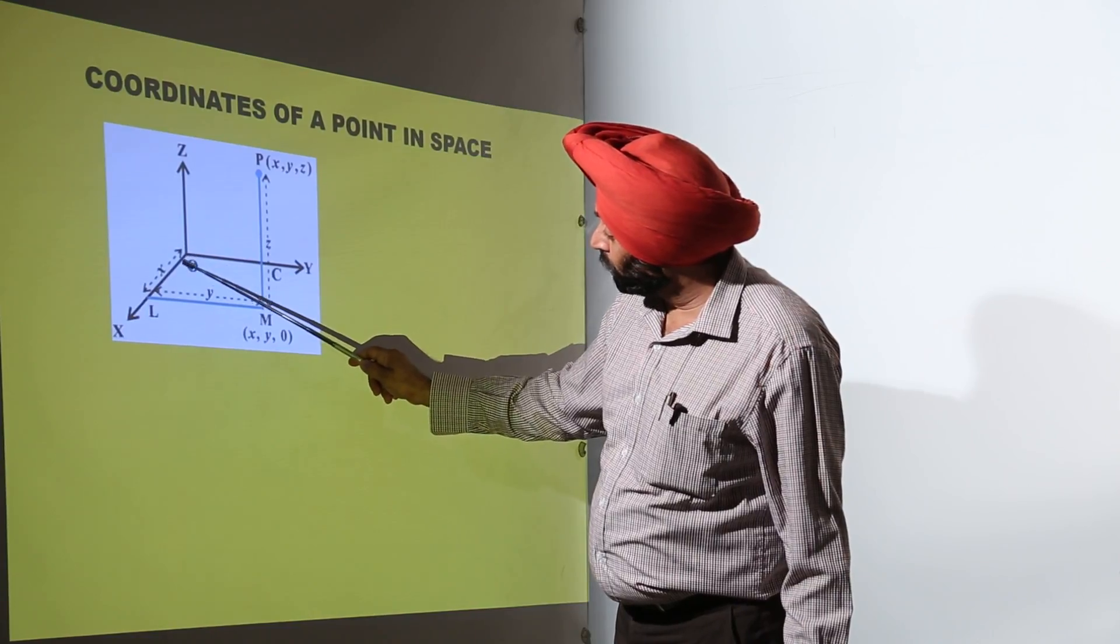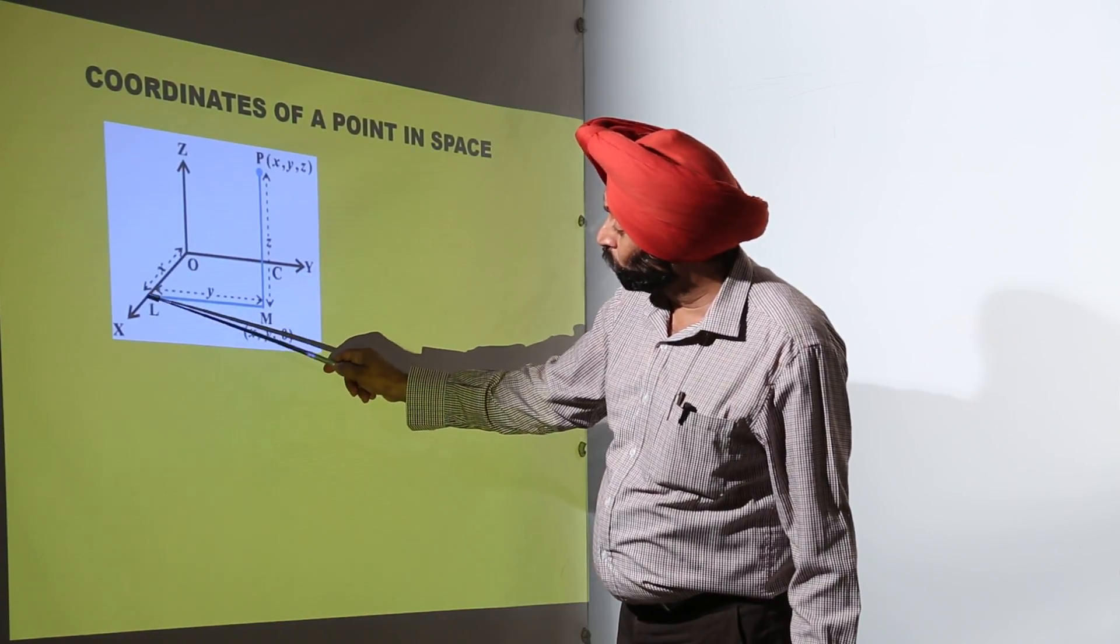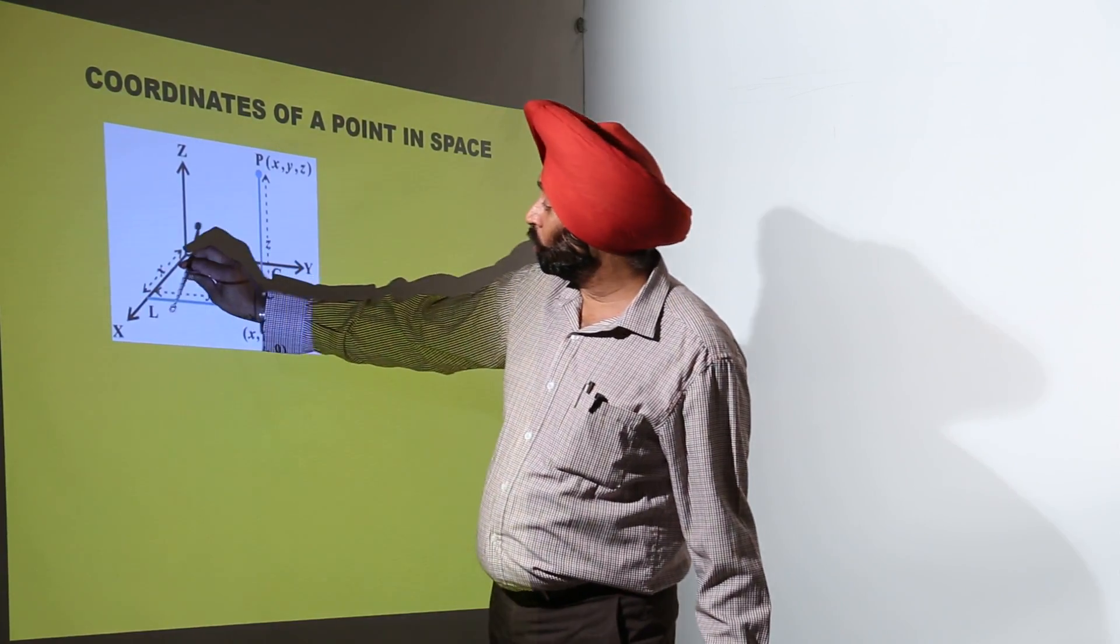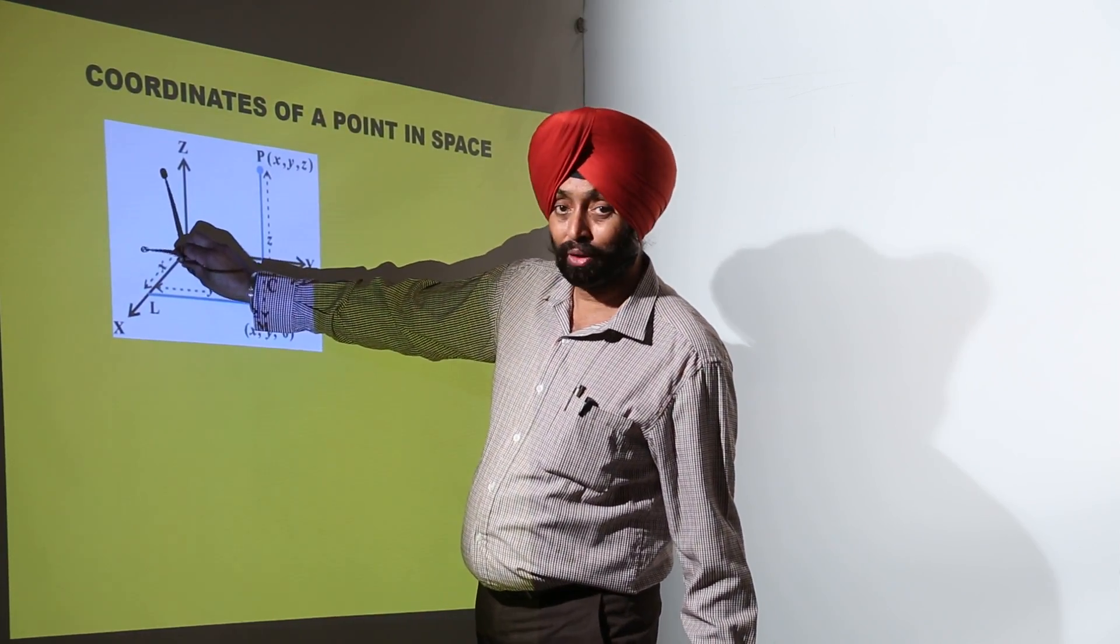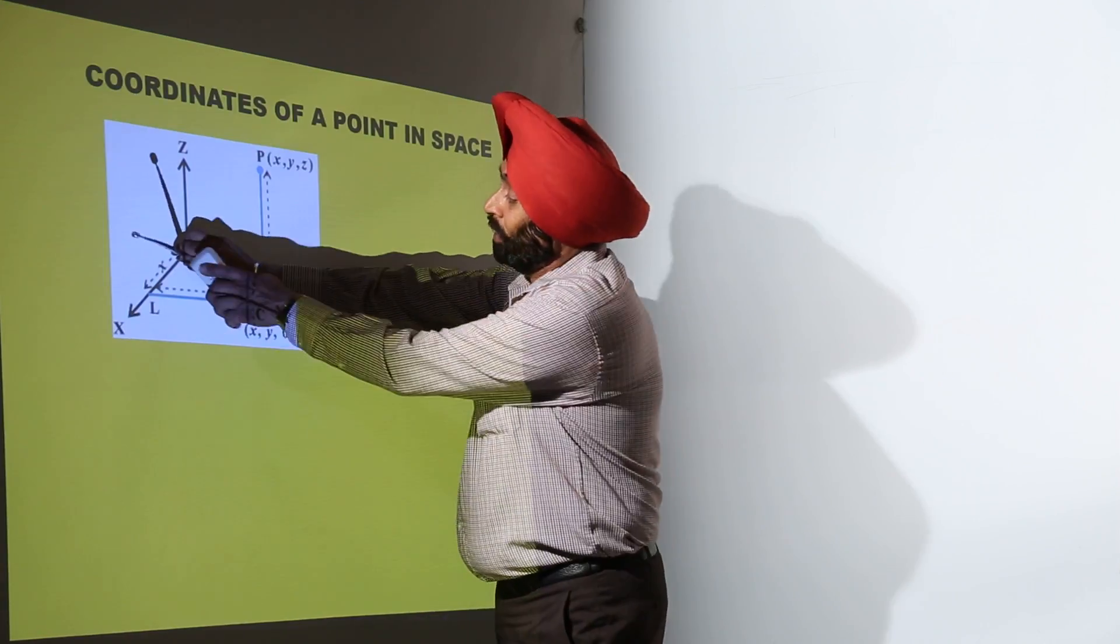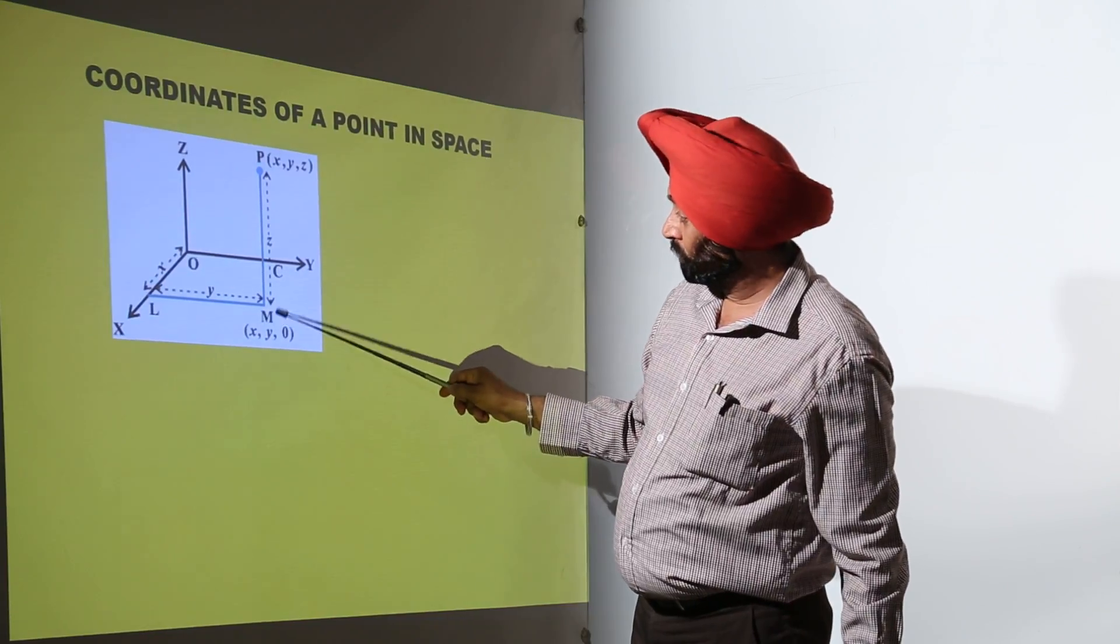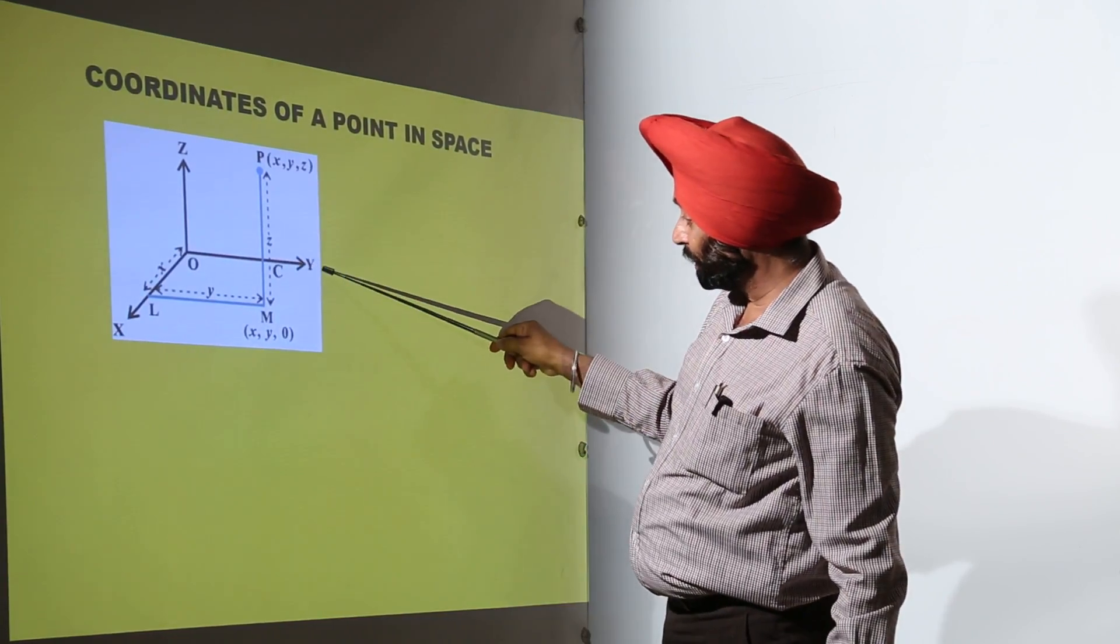This X stands for from here to here, it is point L, so OL is X. Now again, I will tell you this OL means here OX is here, so L is any point lying in between here, so OL.